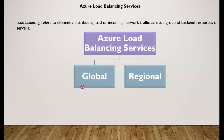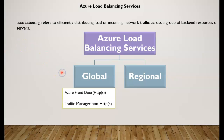For global load balancing, you can use Azure Front Door or Traffic Manager. Both of these technologies can send globally incoming traffic to the closest endpoint, but they work for different purposes.